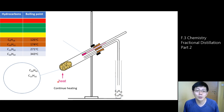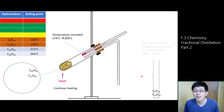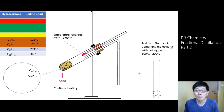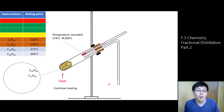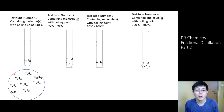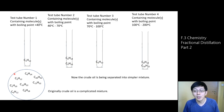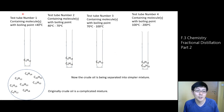If heating continues and the temperature reaches 200 degrees Celsius, we remove the test tube and label it — maybe number 4. This test tube will contain all the hydrocarbons with a boiling point range between 100 and 200 degrees Celsius. We remove this test tube, cap it, and continue the process. By continuing this process, we can separate crude oil into simpler mixtures. Originally the crude oil contains many different types of hydrocarbons; now we can separate them into test tubes 1, 2, 3, 4, each containing hydrocarbons with a definite boiling point range.